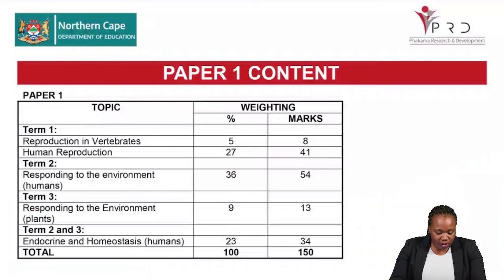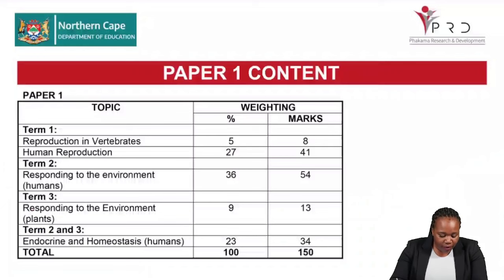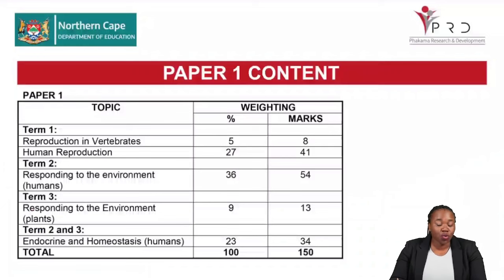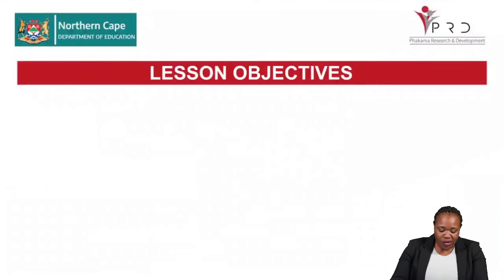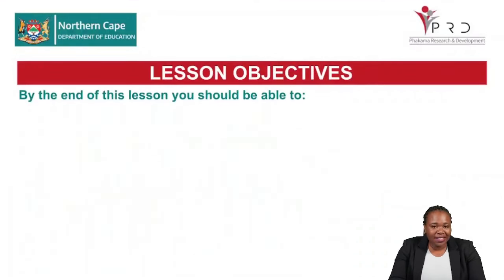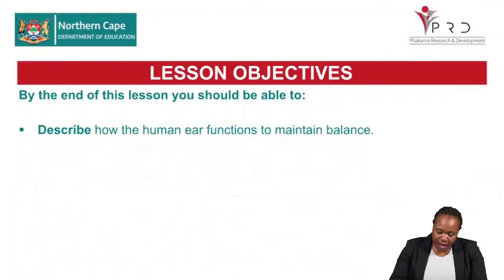The topics and mark allocation for Paper 1 are as follows: reproduction in vertebrates for 8 marks, human reproduction 41 marks, responding to the environment in humans 54 marks, responding to the environment in plants 13 marks, and human endocrine and homeostasis which is 34 marks. By the end of our lesson you should be able to describe how the human ear functions to maintain balance.